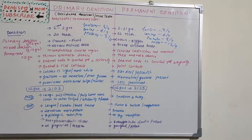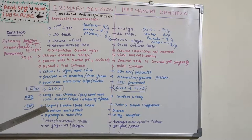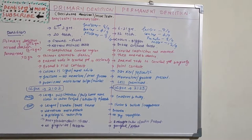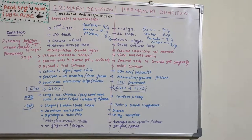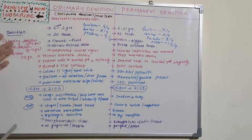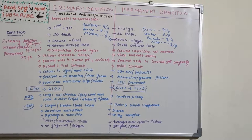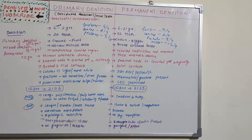This topic is most commonly asked as an essay question or sometimes as a short note or very short note. If asked as an essay question, you need to elaborate under subheadings: enamel, dentine, pulp, cementum, periodontal ligament, gingiva, and alveolar bone — including all subheadings will get you more marks. If it is a short note for three or five marks, you can make a table and write the important characteristics. This covers most of the differences between primary dentition and permanent dentition. I will come up with a new topic in Dentistry and More. Thank you.